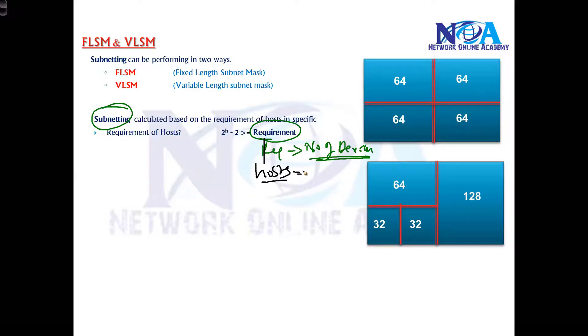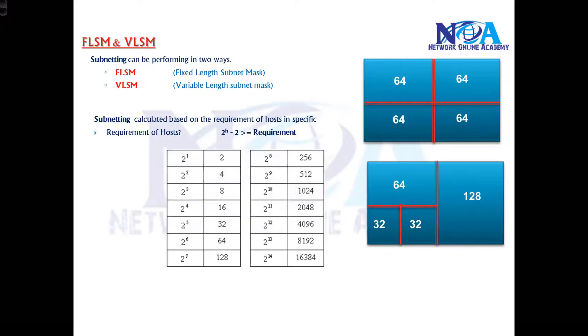Host means nothing but the number of devices. Based on this formula we have to calculate: we'll be using 2 to the power of h minus 2. That is the formula which we use for finding our exact requirement or the exact subnet we can divide.